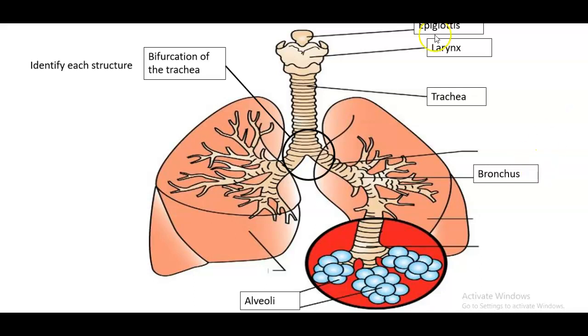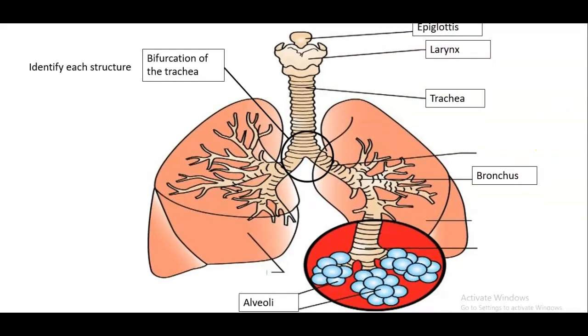So looking at each structure here, shift this above slightly. So we've got the epiglottis, which is the trap door that either opens to allow air to enter into the trachea or it closes so that we can swallow food or water.